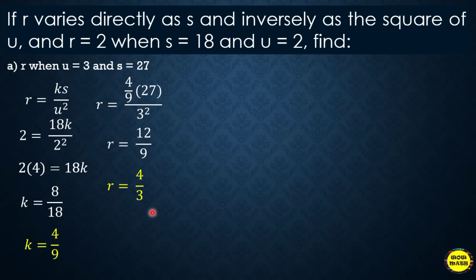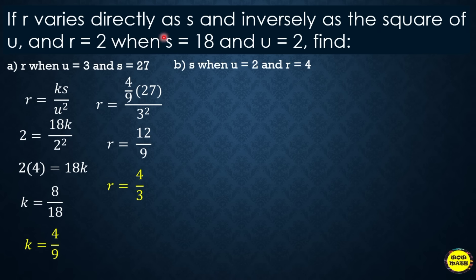To summarize: first find the constant of variation, then use it to build the equation, and substitute the given values of U and S to find R. For the next part of the same problem, find the value of S when U = 2 and R = 4. Using K = 4/9, the equation is R = (4/9)S/U².